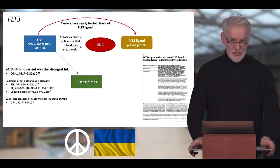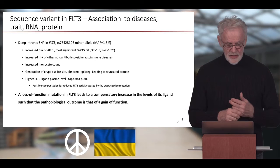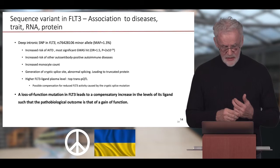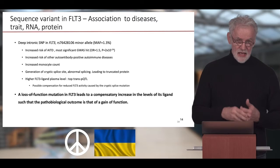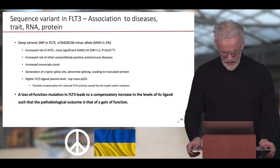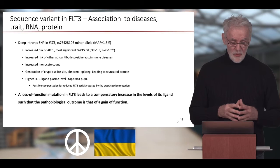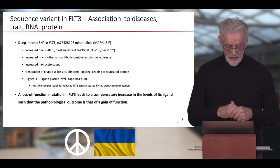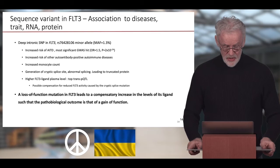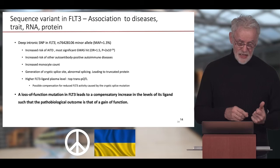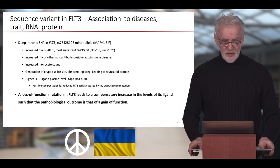We then looked at the impact of the variant on the level of proteins in plasma. Indeed, this variant associated with almost doubling the level of the ligand for FLT3 — the FLT3 ligand was increased by almost 100% in blood. So we found an intronic variant in FLT3 that associated with increased risk of autoimmune thyroiditis and several other autoantibody-positive autoimmune diseases, generated a cryptic splice site leading to a truncated protein, but also considerably increased the ligand for the FLT3 receptor. This loss-of-function mutation therefore led to a compensatory increase in the ligand, such that the pathobiological outcome was indeed a gain of function.